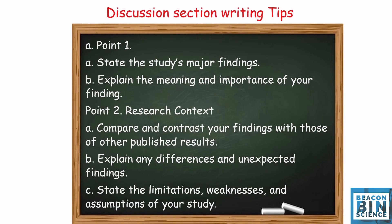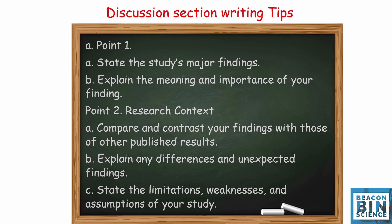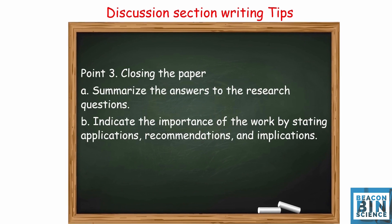Finally, you have to write the discussion section. There are three points to keep in mind. First, state the study's major finding and explain the meaning and importance of your finding. Second, provide research context — compare and contrast your finding with other published results, explain any different or unexpected findings, and state the limitations, weaknesses, and assumptions of your study. Third is the closing of your paper: summarize the answers to the research questions and indicate the importance of the work by stating applications, recommendations, and implications.